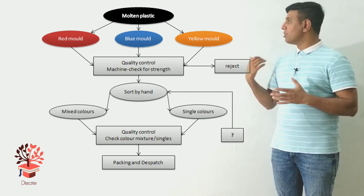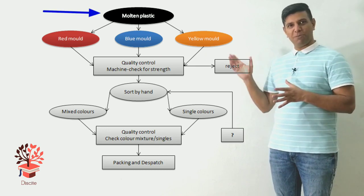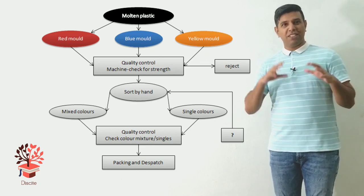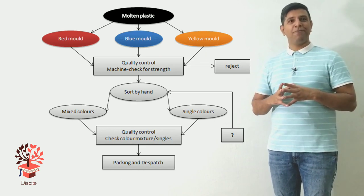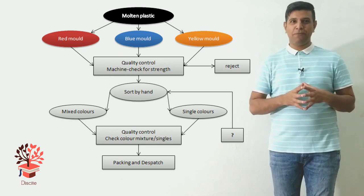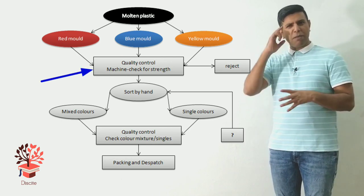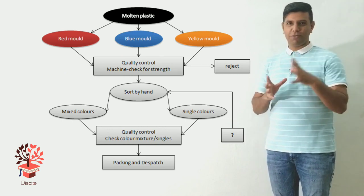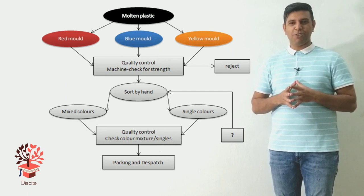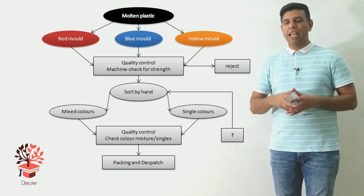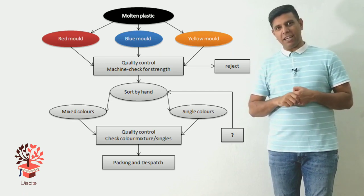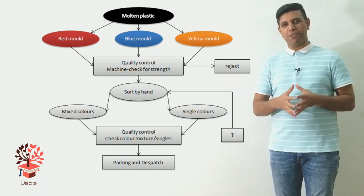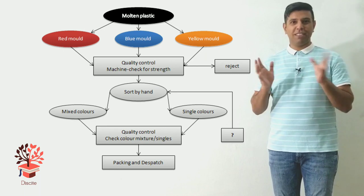So if you have a look at this, on the top you have molten plastic. After that, you have moulds - red, blue, and yellow moulds. This is where the molten plastic goes. And then from there, it goes on to the next step, that is quality control. So imagine quality control. What does it do? For example, when you buy anything, electronics, there's always a QC sticker there. It says quality control passed.